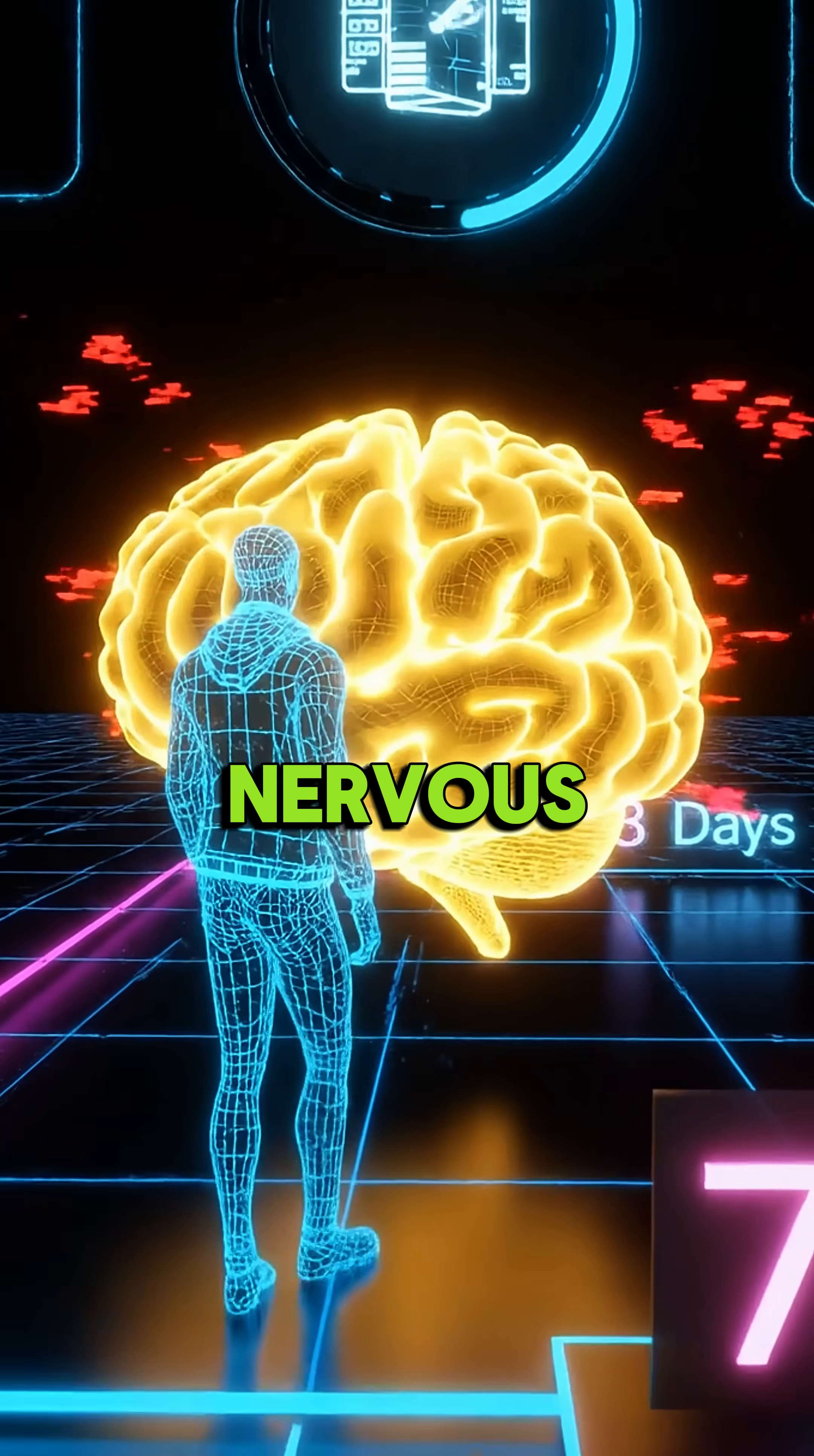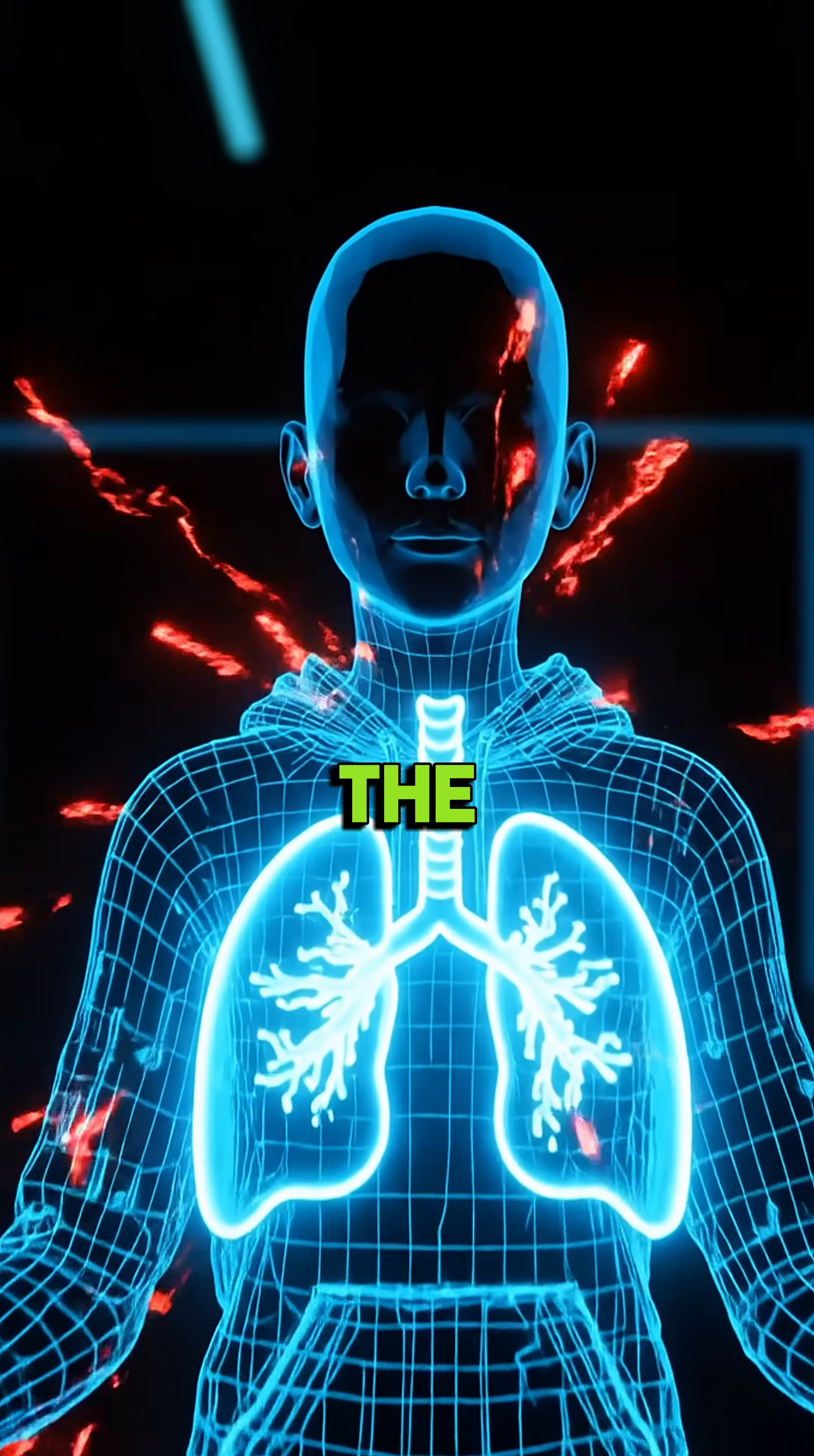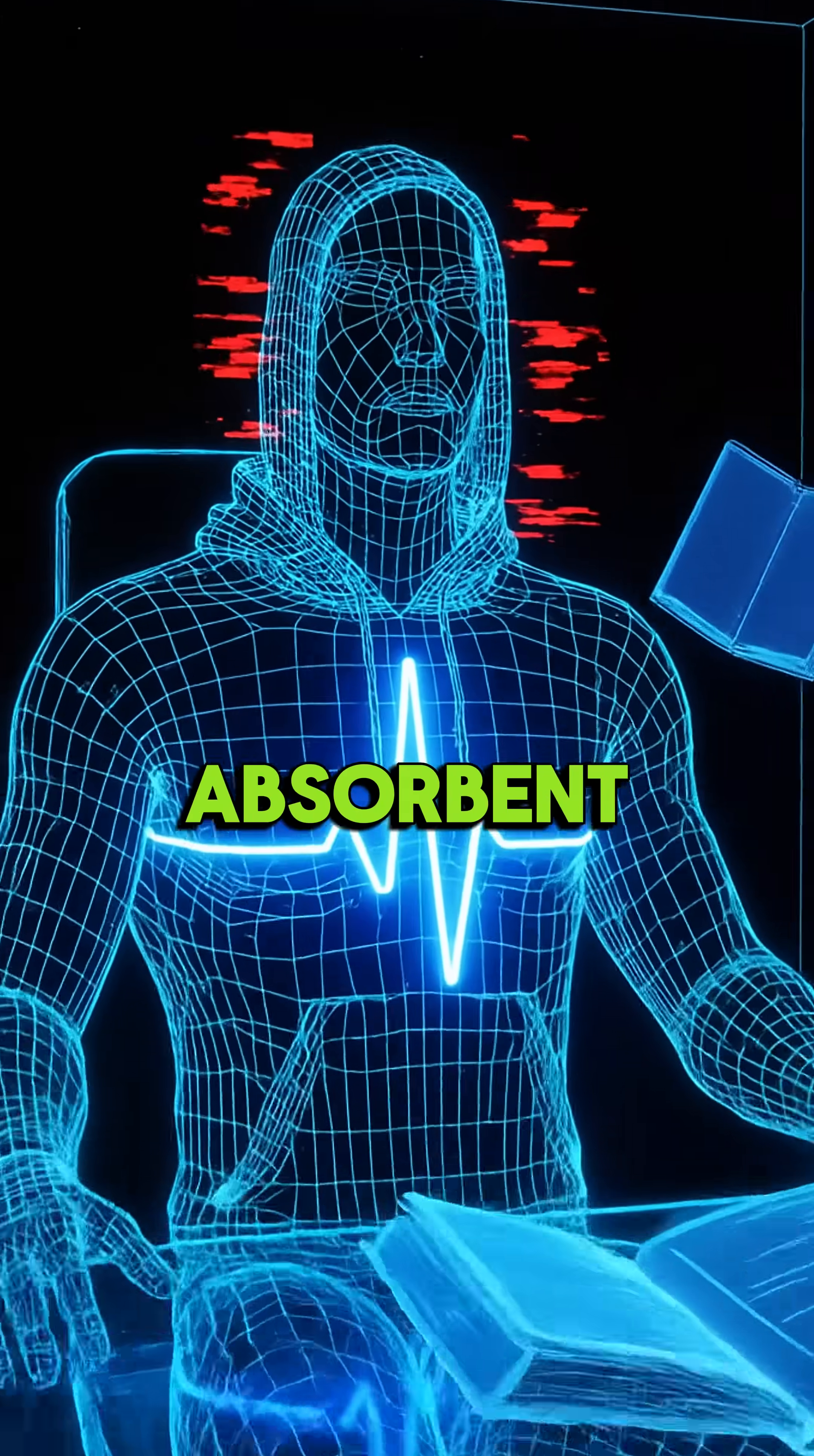Step 1: Reset your nervous system. Take 30 slow breaths through your nose. On the last one, hold for 15 seconds. Your mental noise shuts off. Your brain becomes absorbent.